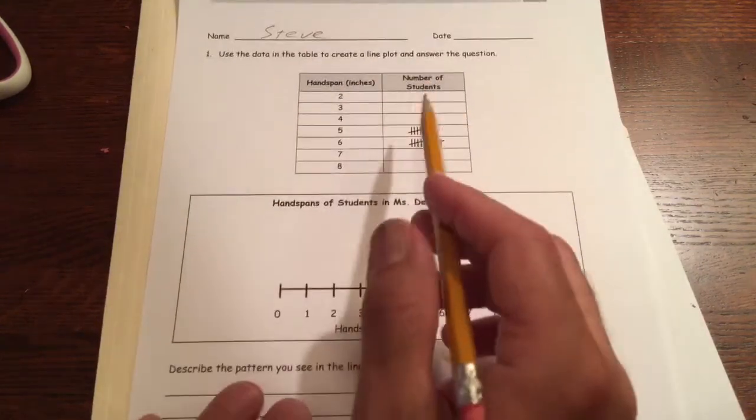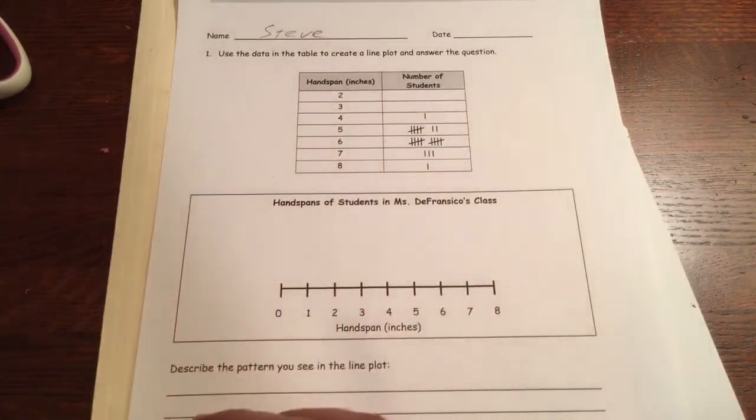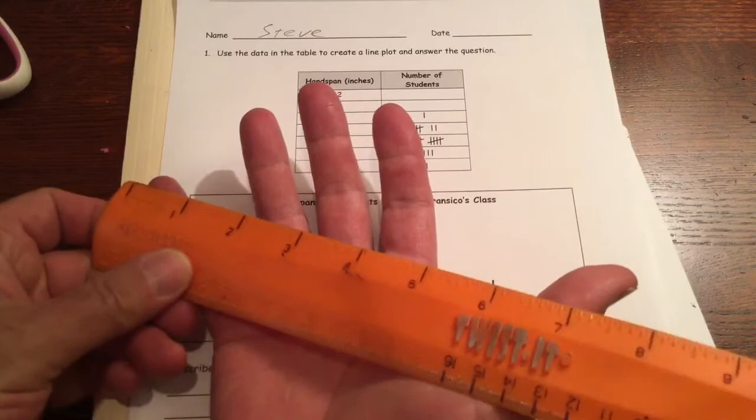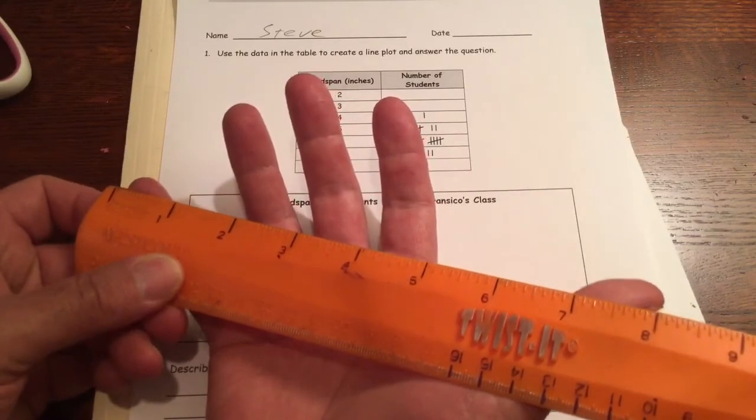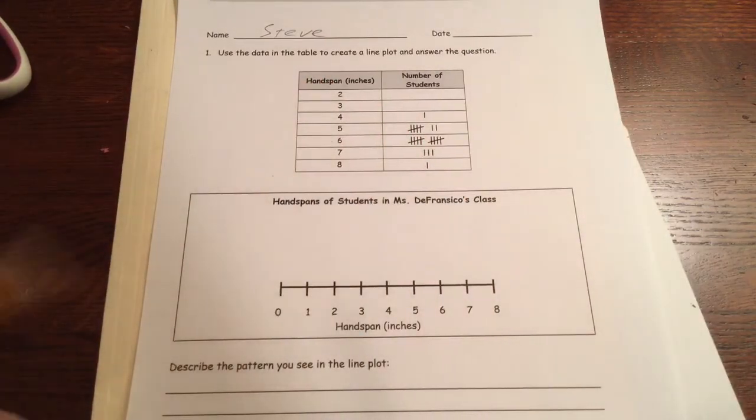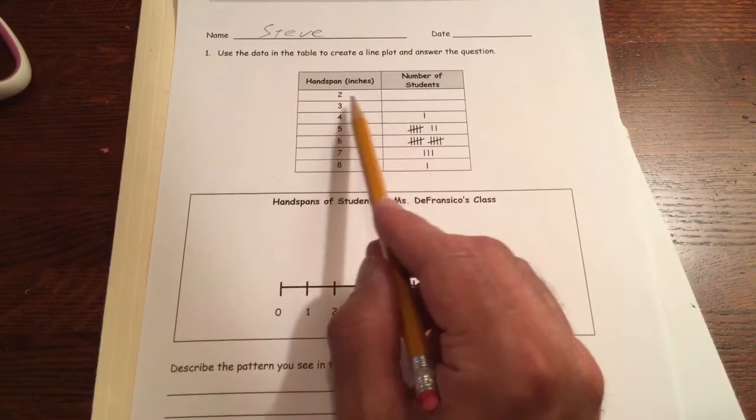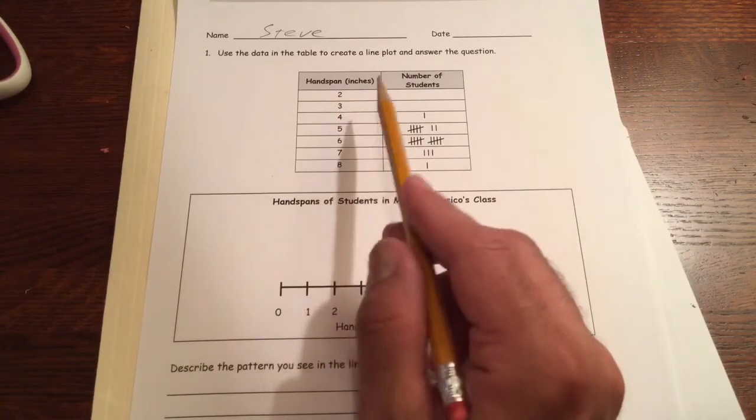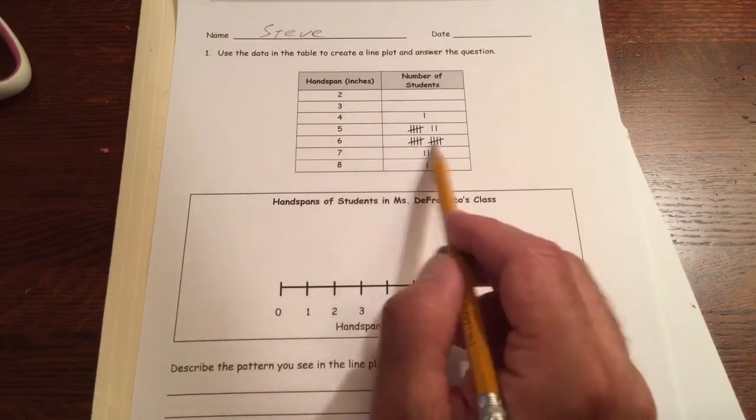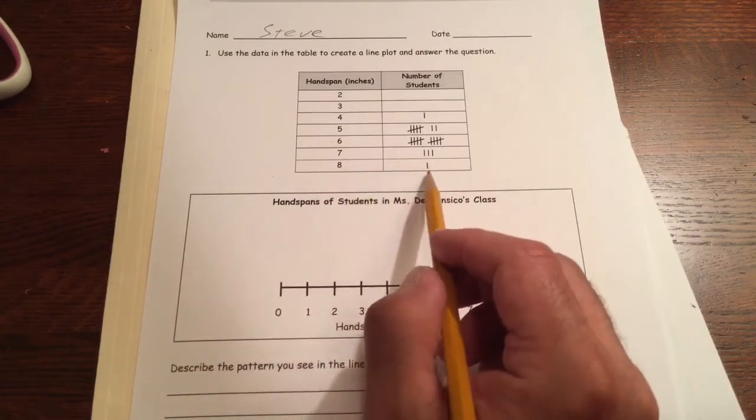Here's the data in our table and we're measuring the hand span in inches of students in a class. You remember the hand span was the distance between the pinky and the thumb, which would be about eight inches. Nobody had one that was only two inches, that would be a really tiny hand. Four inches one person, seven fives, ten people had six inch hand spans, and for seven inches there were three people, and eight inches just one.